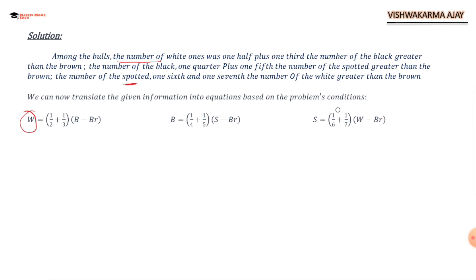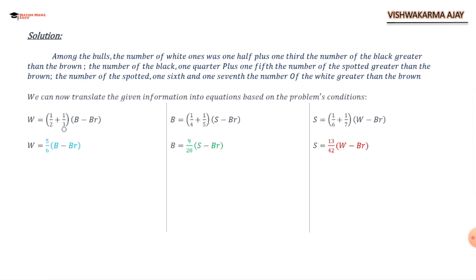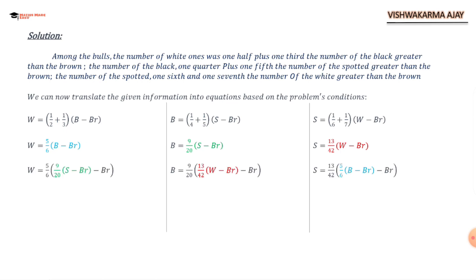So we get: W = (5/6)(B − Br), B = (9/20)(S − Br), and S = (13/42)(W − Br). Now I am going to find the value of white, black, and spotted in terms of brown.